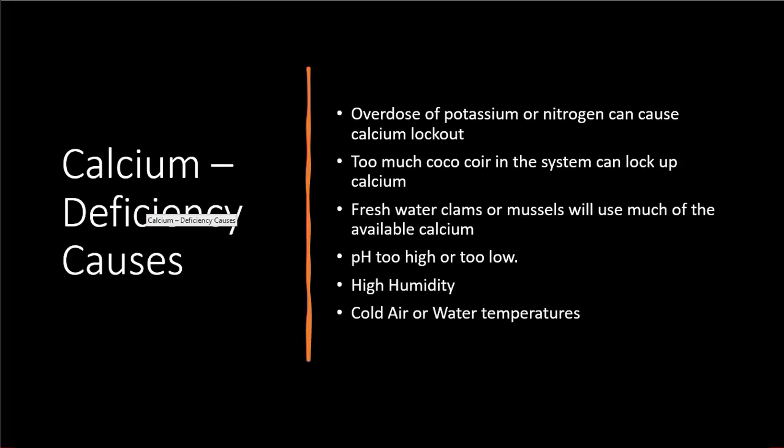Calcium deficiency causes. An overdose of potassium or nitrogen can cause calcium lockout. Also, coco coir that many people use to start seedlings — and then transfer into net pots or media beds — sucks up calcium and sequesters it, making it unavailable for plants. So if you're using coco coir, keep it to a minimum and research the pros and cons before using it.